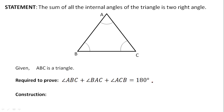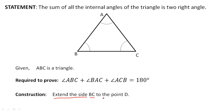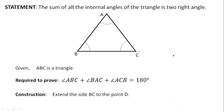Before we proceed to the proof, we need to construct something. We extend the line BC to a point D. So we must extend this line to the point D. This construction is done because it helps us use a result that we already know.